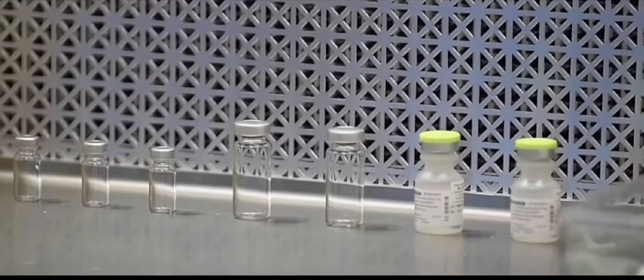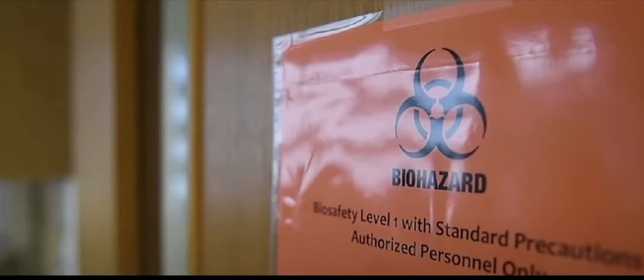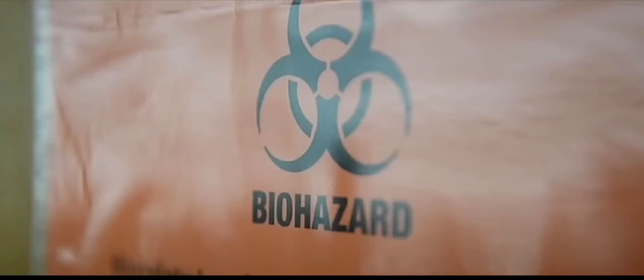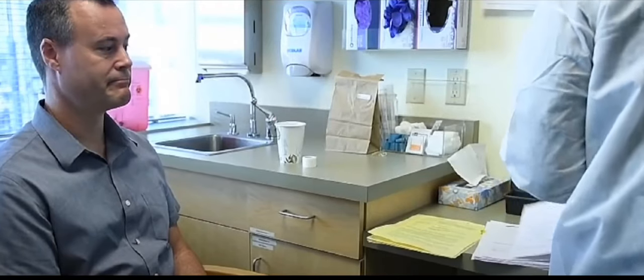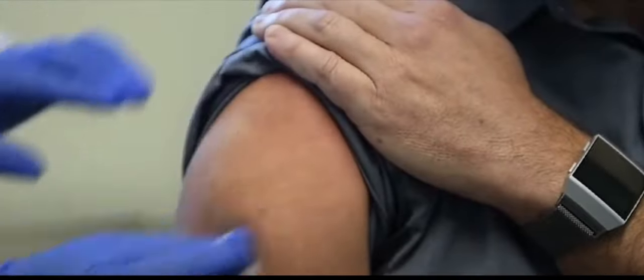ChAdOx1 nCoV-19 is a so-called recombinant viral vector vaccine. It is made from a harmless virus that's been altered to produce the surface spike protein of the pandemic-causing SARS-CoV-2 virus.